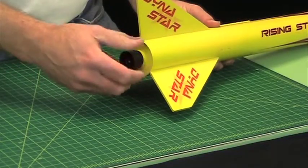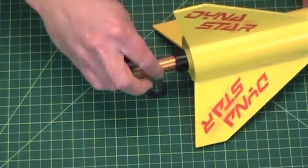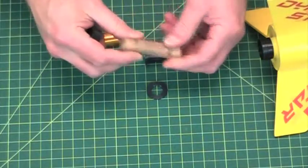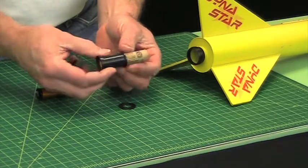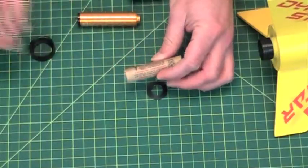Now this is a reload engine, but most people have just the single-use Estes engines. Now the Estes engines like this one here don't have a thrust ring on the back, so when you slide it in it just keeps on going. So what you'll need to do is to build up a thrust ring.